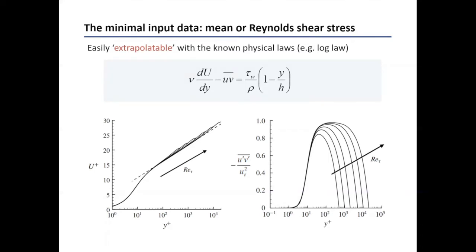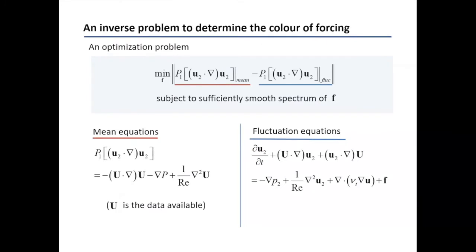I measure the mean velocity profile at low Reynolds numbers, obtain a fitting curve, and extrapolate it to higher Reynolds numbers — using whatever extrapolation technique, including machine learning. The resulting mean velocity profile shows the traditional log law and is consistent with known physical laws. With U assumed known, I can compute the Reynolds stress from the mean equation.